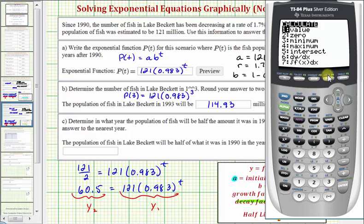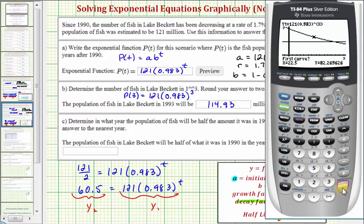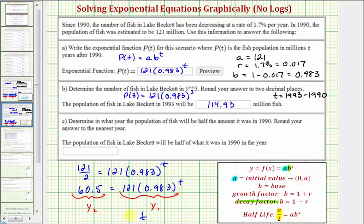We'll press second, trace for the calculation menu, option five for intersection, and then enter three times. Notice how the point of intersection shows here below. It takes approximately 40.4 years for the population to reach half of the starting population. The question asks us to round to the nearest year, so we round the value of t to 40. So t is approximately 40, but this question doesn't ask how long it will take. It asks in what year this would occur. To find the year, we take the base year of 1990 and add the approximate number of years, which is 40, which will give us the year 2030.